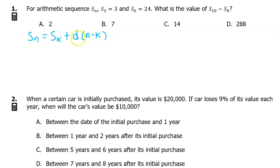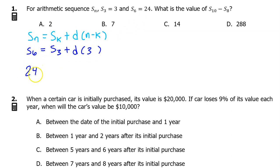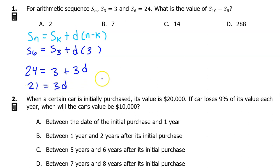First you have to find the common difference D by plugging in S6 for Sn and S3 for Sk. The n minus K is 6 minus 3, so that's 3. Sk is 24, and S3 is 3, so we have 3D. Subtracting 3 from both sides gives 21 equals 3D. Dividing both sides by 3, we get D equals 7.